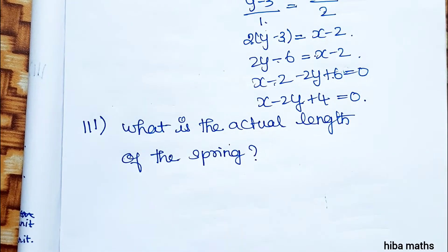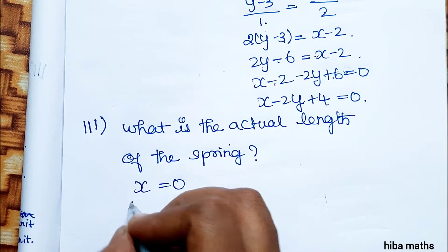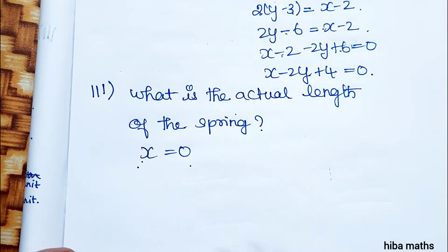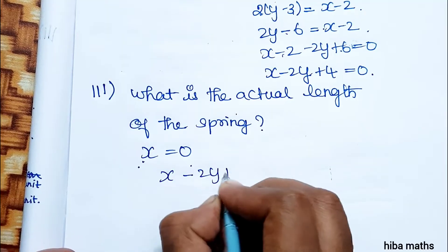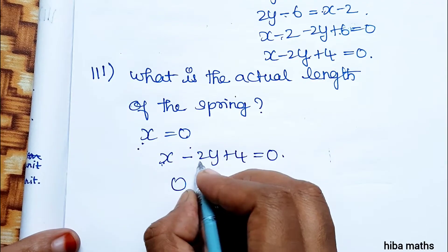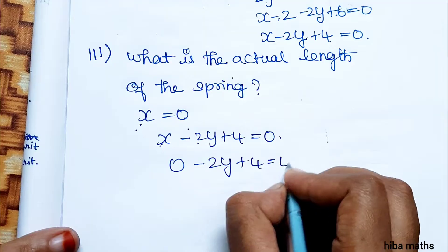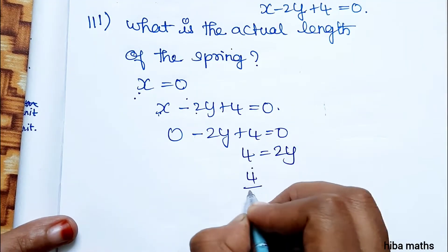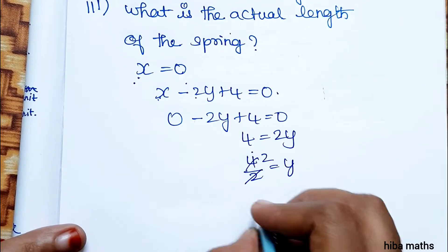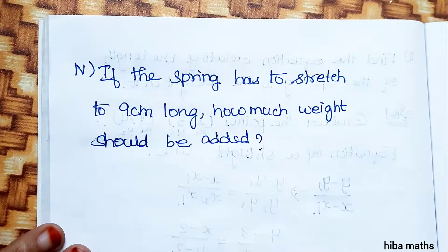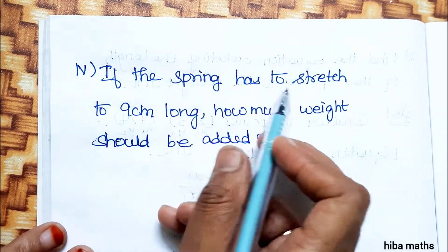Third sub-question: What is the actual length of the spring? The actual length means weight is 0, so x = 0. Substituting into the equation x − 2y + 4 = 0: 0 − 2y + 4 = 0, so 2y = 4, therefore y = 2 centimeters.